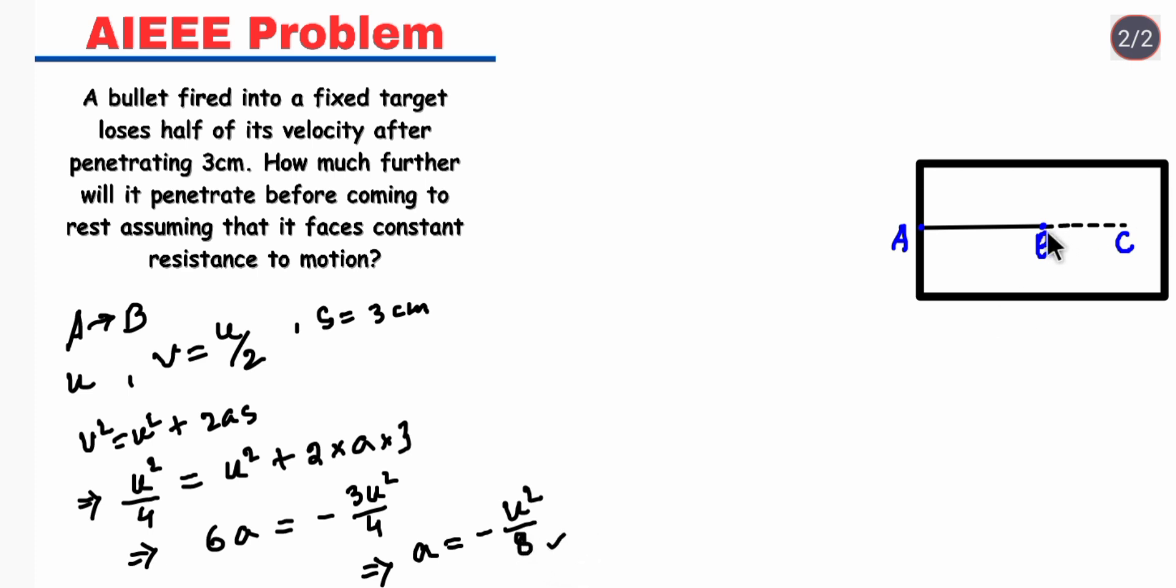Now if we consider the portion from B to C, the velocity at B is U by 2 and velocity at C is 0. When considering the portion B to C, the initial velocity U prime equals U by 2 and V equals 0.